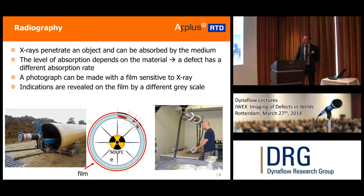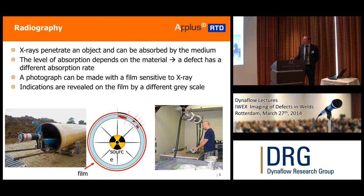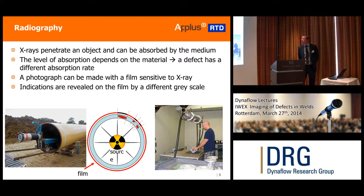What you do is have a film that is sensitive to X-rays — much like an older photo film. By exposing this film to the X-rays, you get either a black or white indication depending on the absorption. The level of absorption depends on the material, and the indications on the film show defects by grayscale.